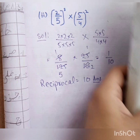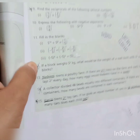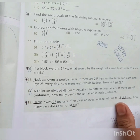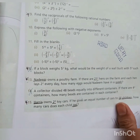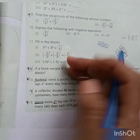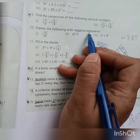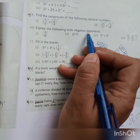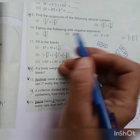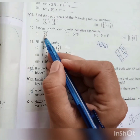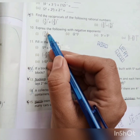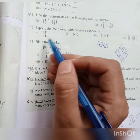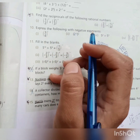Next, question number 10 starts. Question number 10: find the following with the negative exponent. Exponent means power. We have to convert the positive power of the given numbers into negative power. Let's start the question on our register.